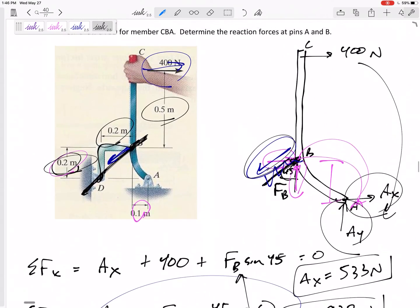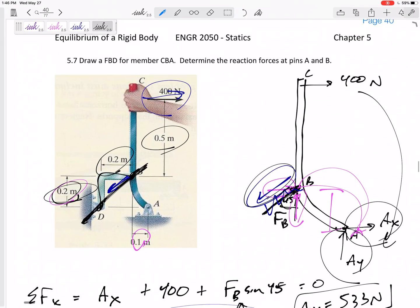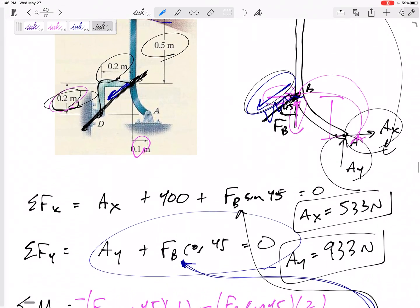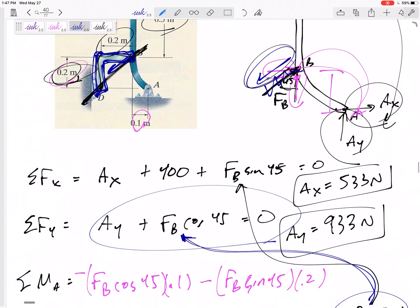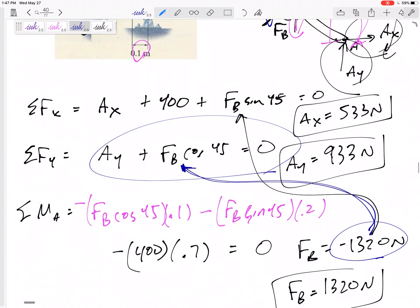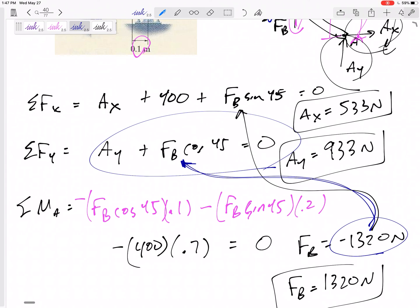So, we needed to recognize that that force at B is a two force member so that I don't draw a BX and a BY. If you didn't recognize it and you had four unknowns, then what you would have had to have done, you would have had to come and draw a free body diagram of the link and you'd have some more equations for the link and you'd really be going around the world just to get the correct answer right there.